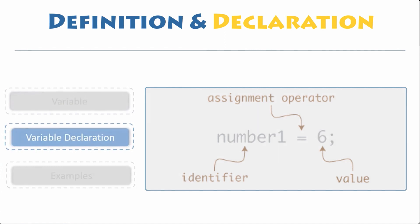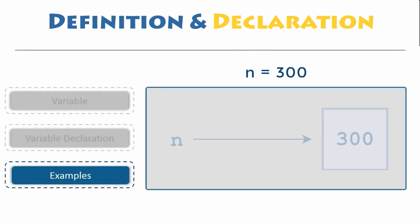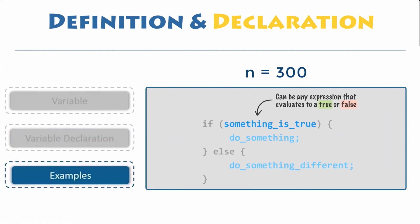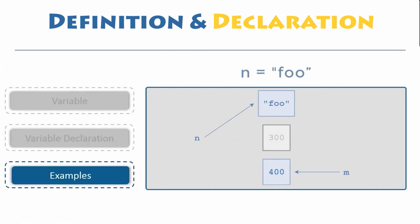Assignment is done with a single equal sign. This is read or interpreted as n is assigned the value 300. Once this is done, n can be used in a statement or expression and its value will be substituted. Later, if you change the value of n and use it again, the new value will be substituted instead.